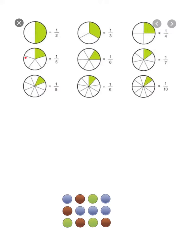The whole is split into fifths. One fifth colored in. The whole is split into sixths. One sixth, one seventh, one eighth, one ninth, one tenth.